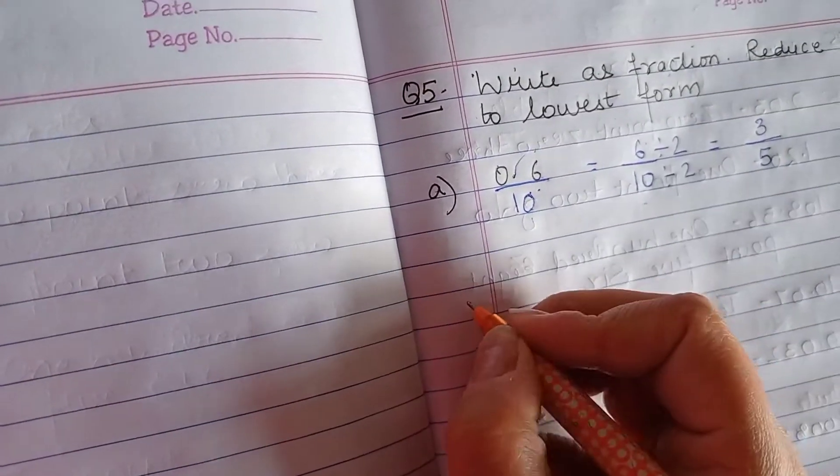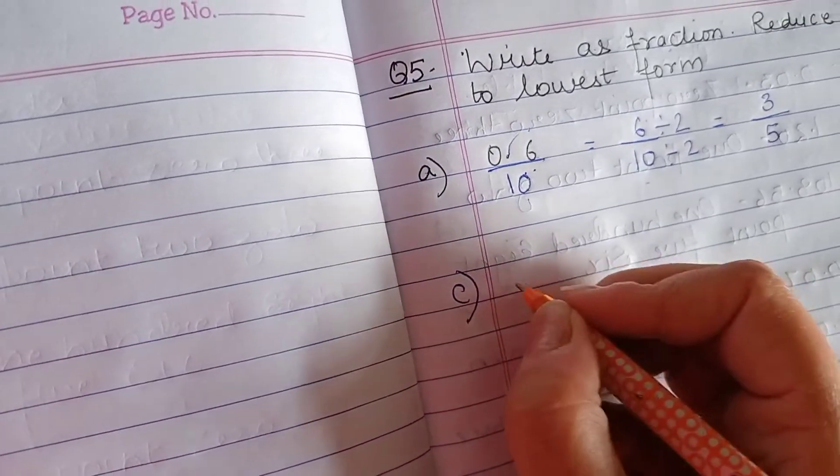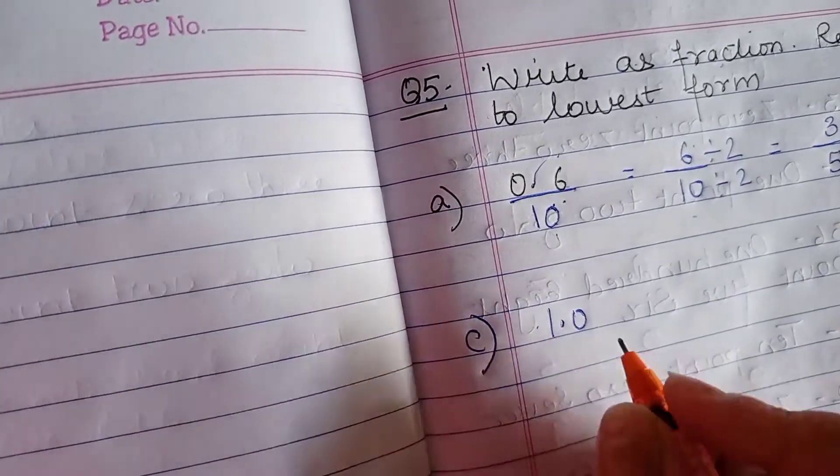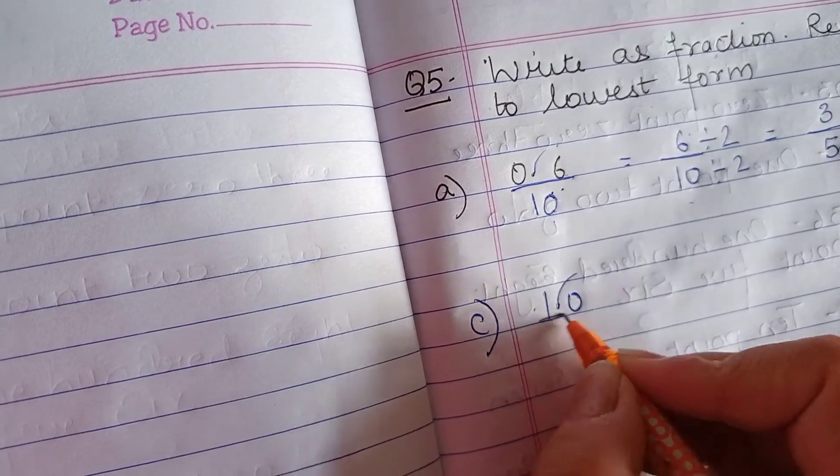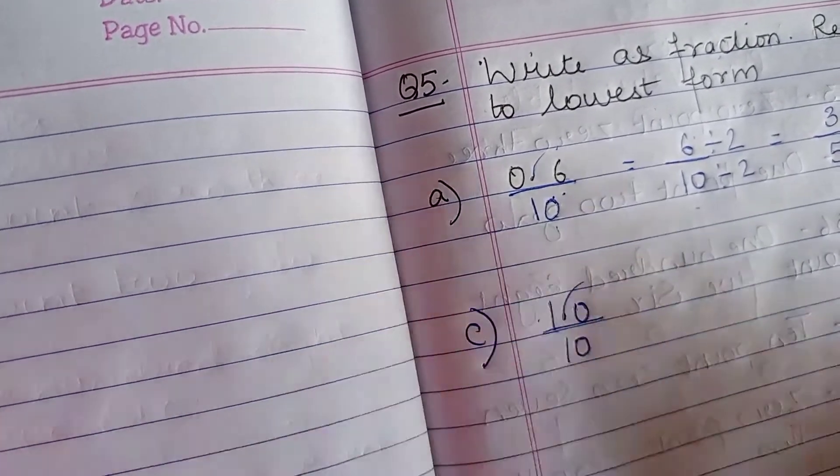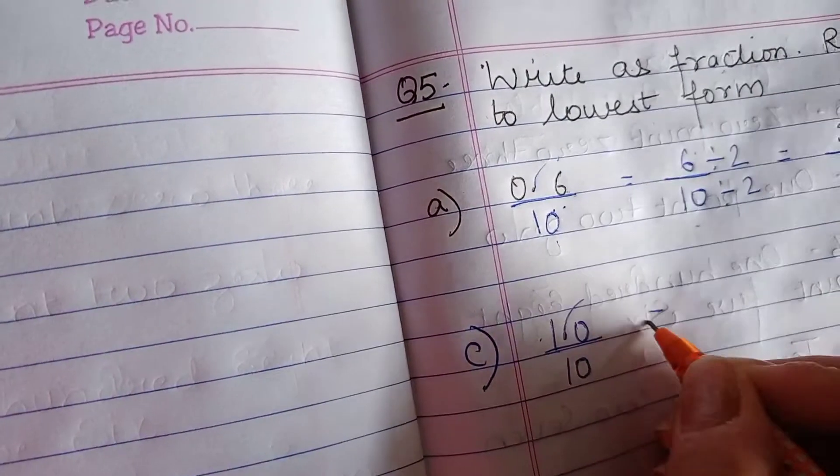Let me do one more part. I am doing here alternate part. See part c, 1.0. Again first step is to remove the decimals. Put number here. Now just be careful. Don't write 0 only.